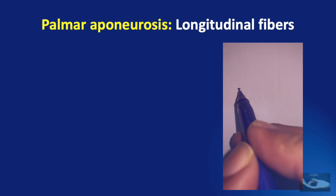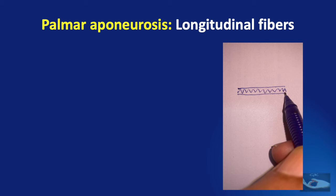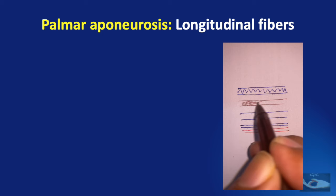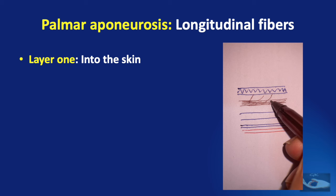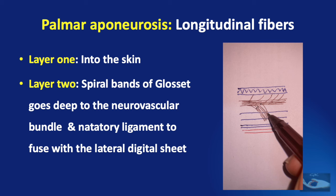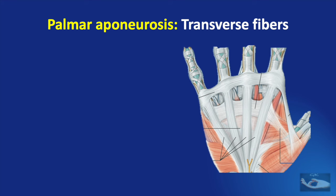Consider the skin of the palm, the flexor tendons, and the neurovascular bundle on one side. These are the longitudinal fibres or the pre-tendinous bands. One attachment is to the skin that is superficial to it, and the second layer of attachment consists of what are known as the spiral bands of Gosset, which go deep to the neurovascular structures and the natatory ligament to fuse with the lateral digital sheath of the fingers.